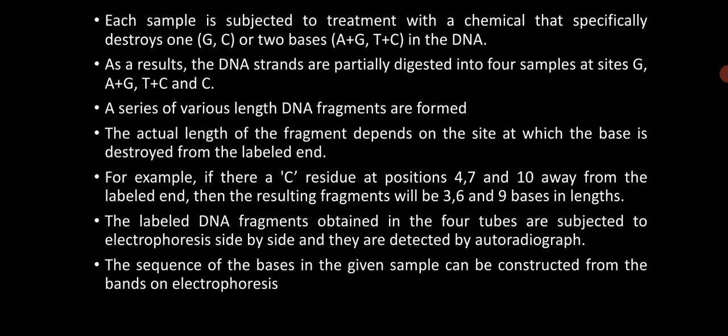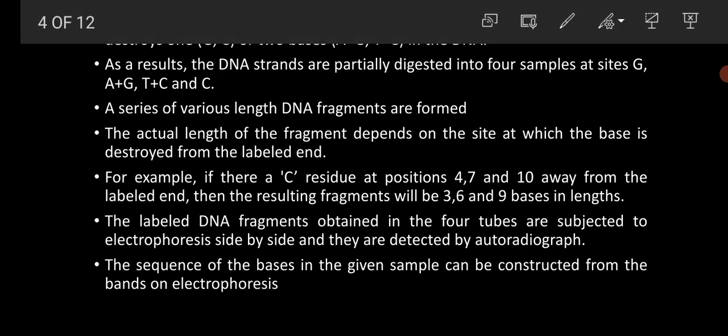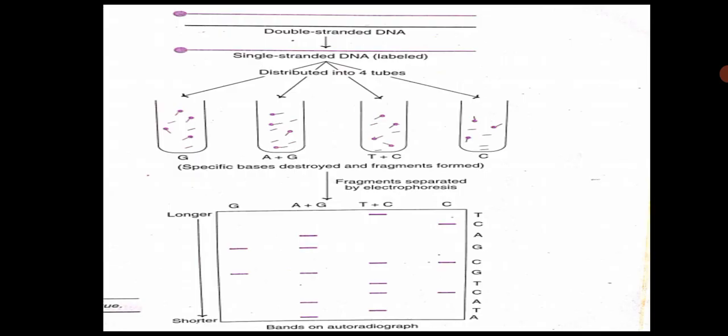The sequence of bases in the given sample can be constructed from the bands on electrophoresis. The samples from the G tubes are loaded in a separate well, the A and G sample in a separate well, the T and C sample in a separate well, and the C sample in a separate well. The bands form depending on the fragments produced after chemical treatment. If a band is formed in both the G tube and the A plus G tube, the base is guanine.